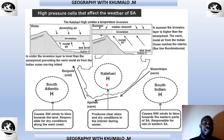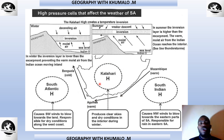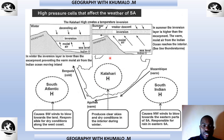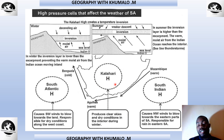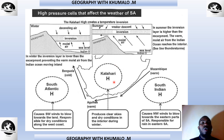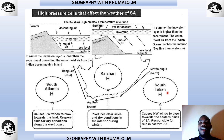The Kalahari High Pressure Cell is located over the interior — you've definitely learned this in school. We know that when we find the Kalahari High Pressure Cell over the interior of South Africa, it is winter, because it's only visible over the interior during winter. Then we have the South Atlantic High Pressure Cell and the South Indian High Pressure Cell.